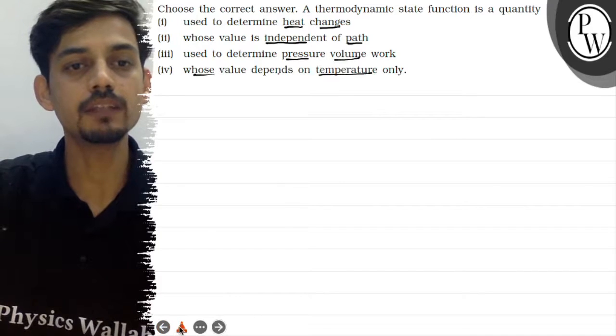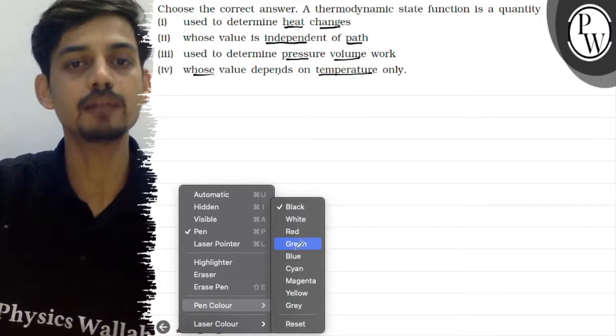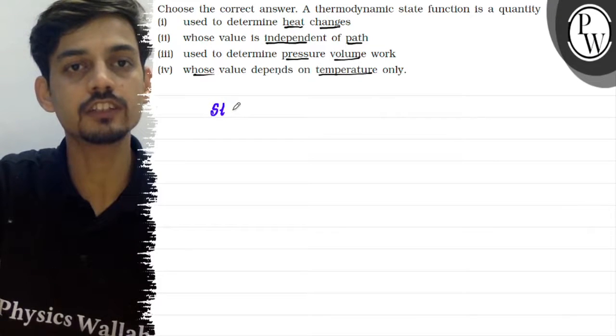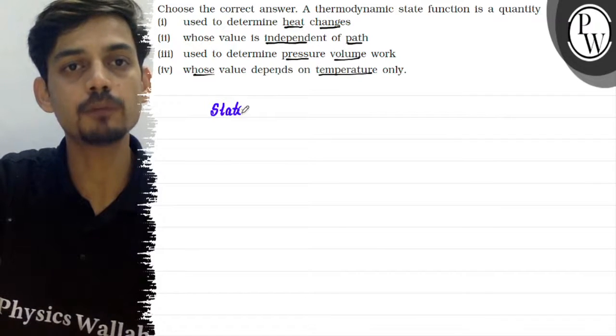If we look here, we are talking about thermodynamic state function. Thermodynamics has state function and path function - two types of thermodynamic properties.